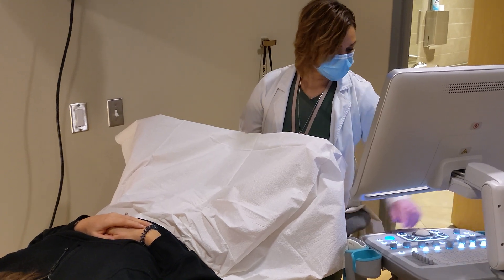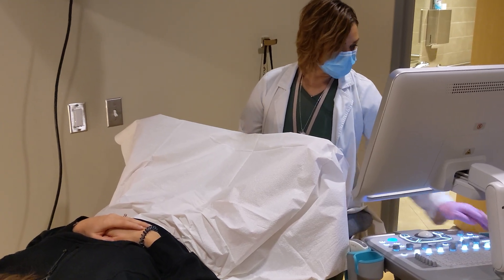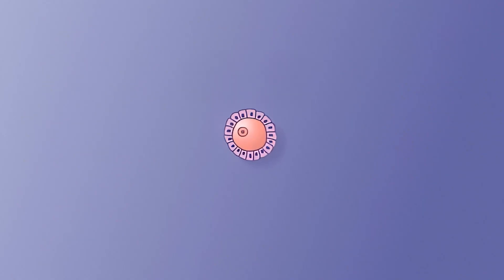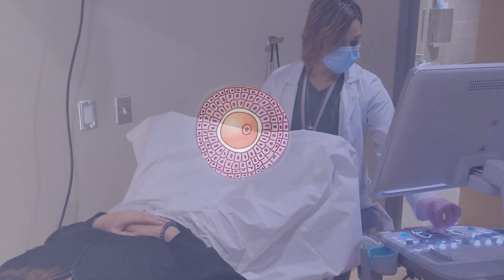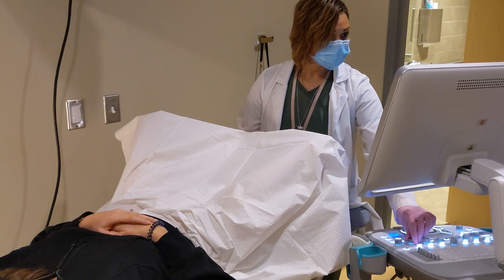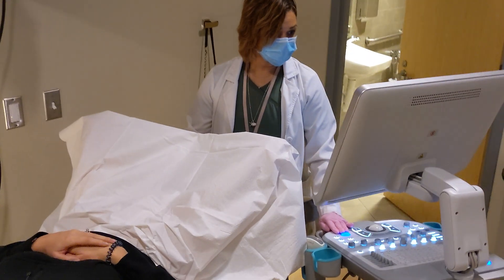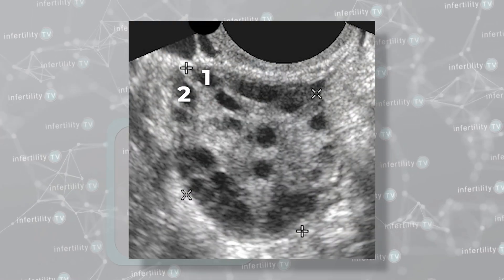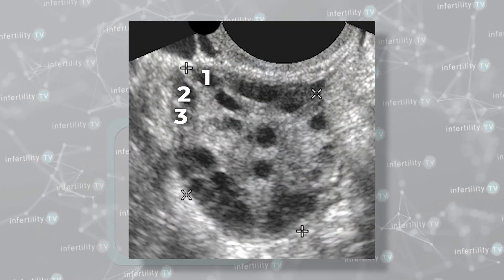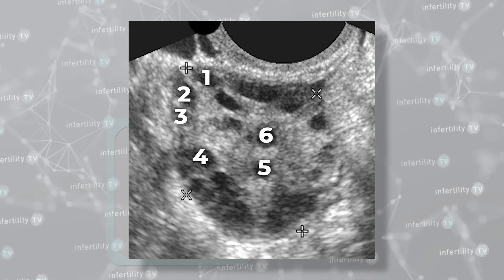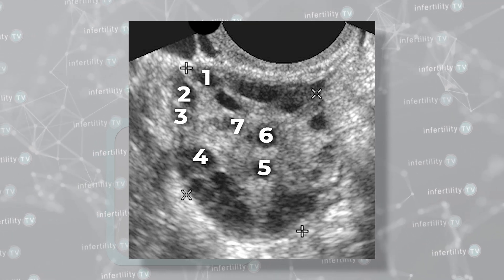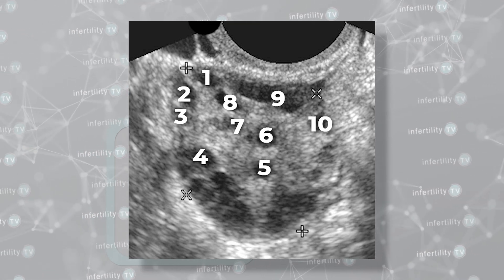Ultrasound can also be used to estimate reserve. Each egg in the ovary is surrounded by a group of cells, called a follicle. During maturation, some fluid is produced in the follicle which can be seen with ultrasound. By counting the number of follicles that are visible at the beginning of your period, doctors can get an estimate of ovarian reserve — if they see more follicles, your reserve is better.